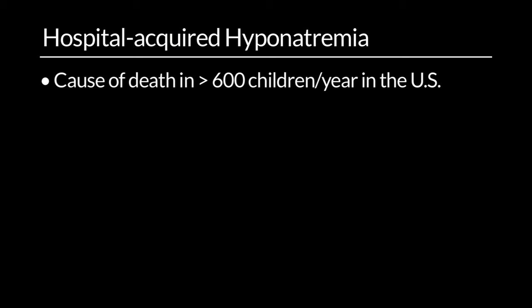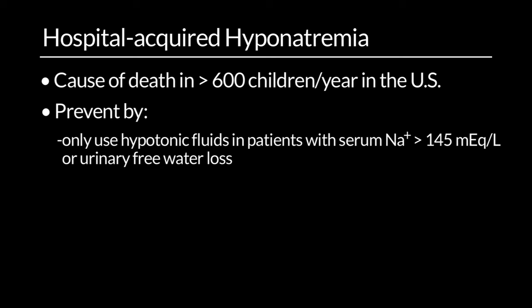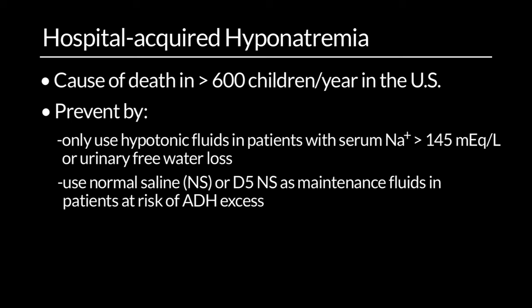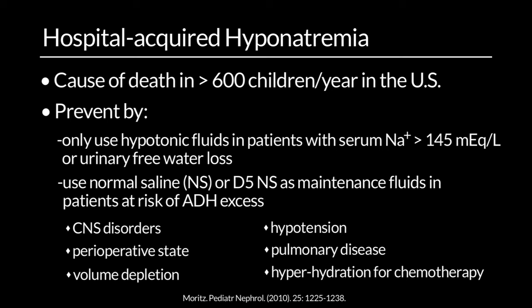Hospital-acquired hyponatremia leads to more than 600 pediatric deaths in the United States each year in the post-operative period. It is extremely important to prevent hyponatremia in hospitalized children by limiting hypotonic fluids to patients with serum sodium above 145 or urinary free water loss, and by using normal saline or D5 normal saline as maintenance fluids in patients at risk of ADH excess.